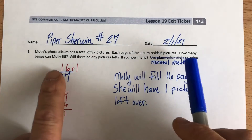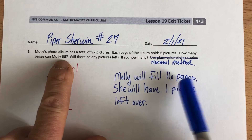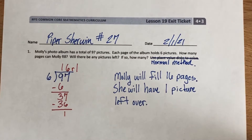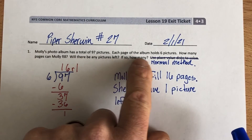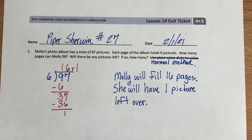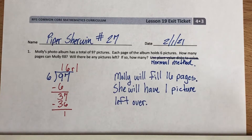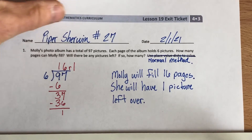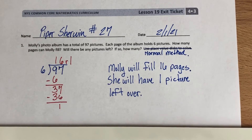So the question here says: how many pages can Molly fill? Molly will fill 16 pages. I restated the question and answered it with a capital letter and a period at the end. And then it says: will there be any pictures left? If so, how many? I took those two questions and made one complete sentence out of it — I basically answered the question with one sentence: she will have one picture left over. So she'll fill 16 pages and have one picture left over.